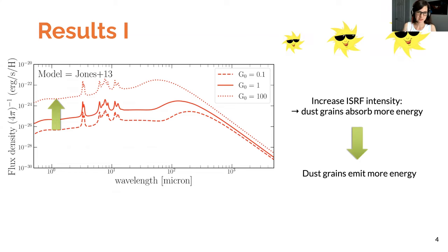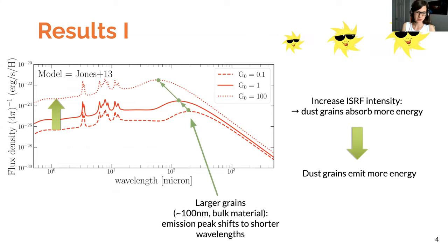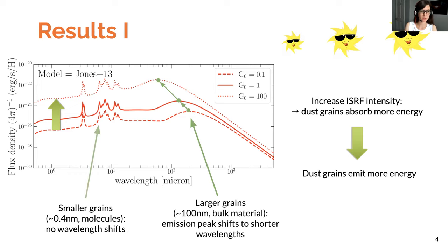We also notice that the larger grains, which make up the bulk material of the dust, will heat up, and so the peak of their emission will shift to shorter wavelengths. But this does not happen for the smaller grains, which behave as molecules and will just emit at specific wavelengths.